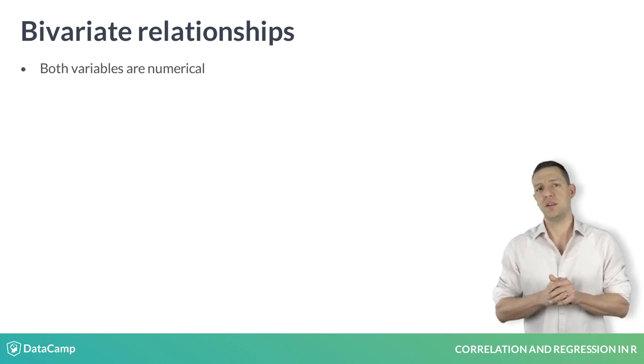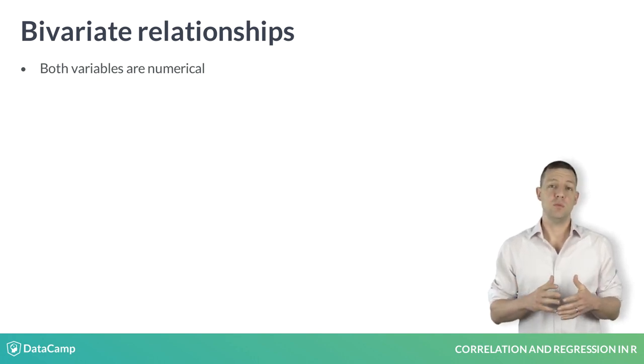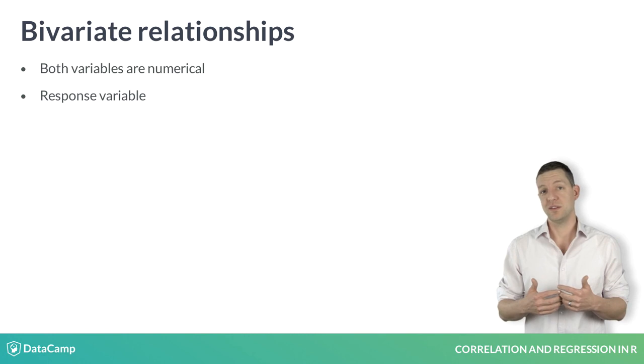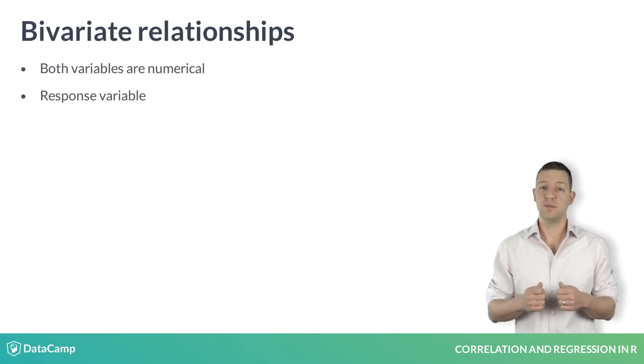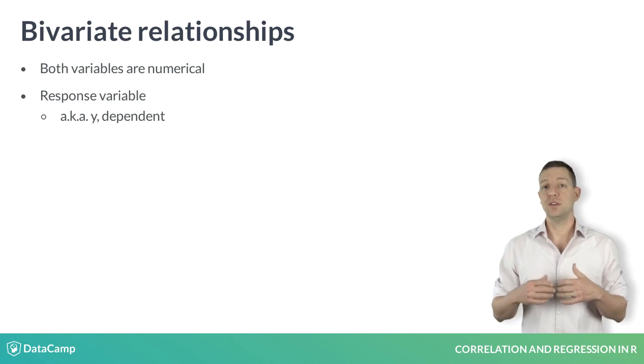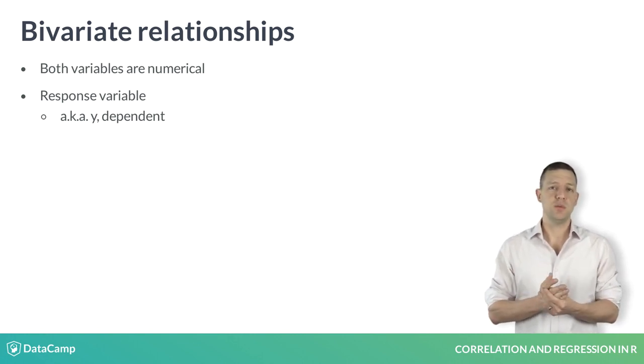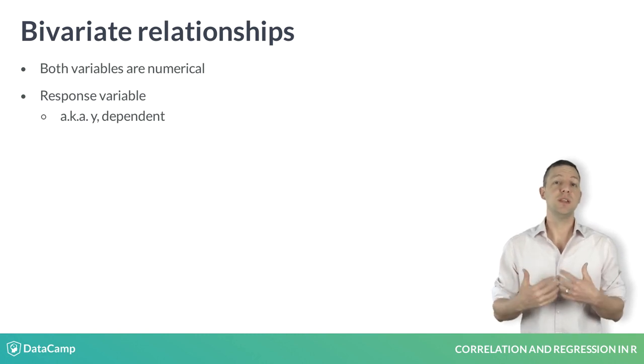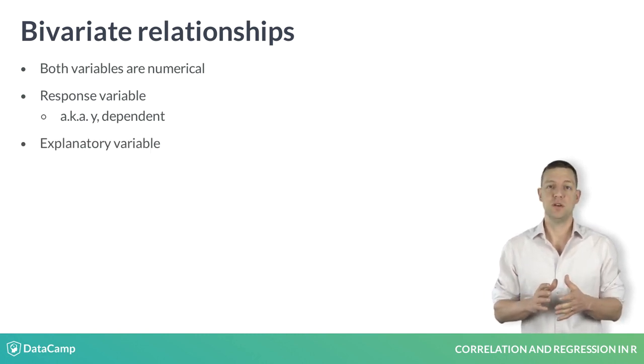In a statistical model, we generally have one variable that is the output, and one or more variables that are the inputs. We will refer to the output variable as the response, and we'll denote it with the letter Y. In other disciplines or contexts, you may hear this quantity called the dependent variable. More generally, the response variable is a quantity that we think might be related to the input or explanatory variable in some way.